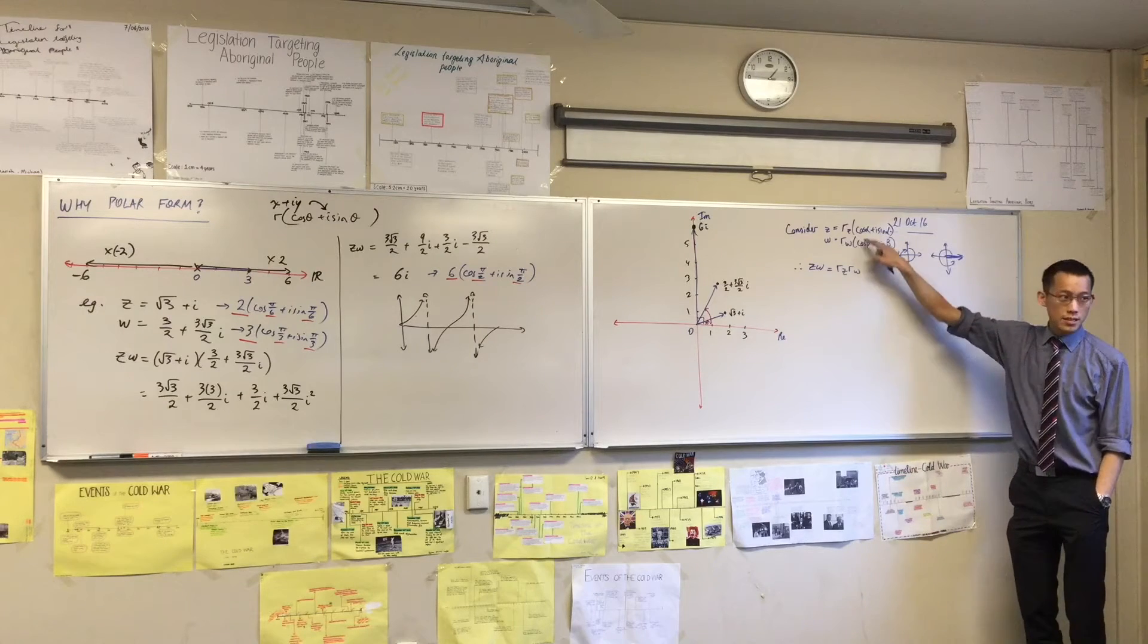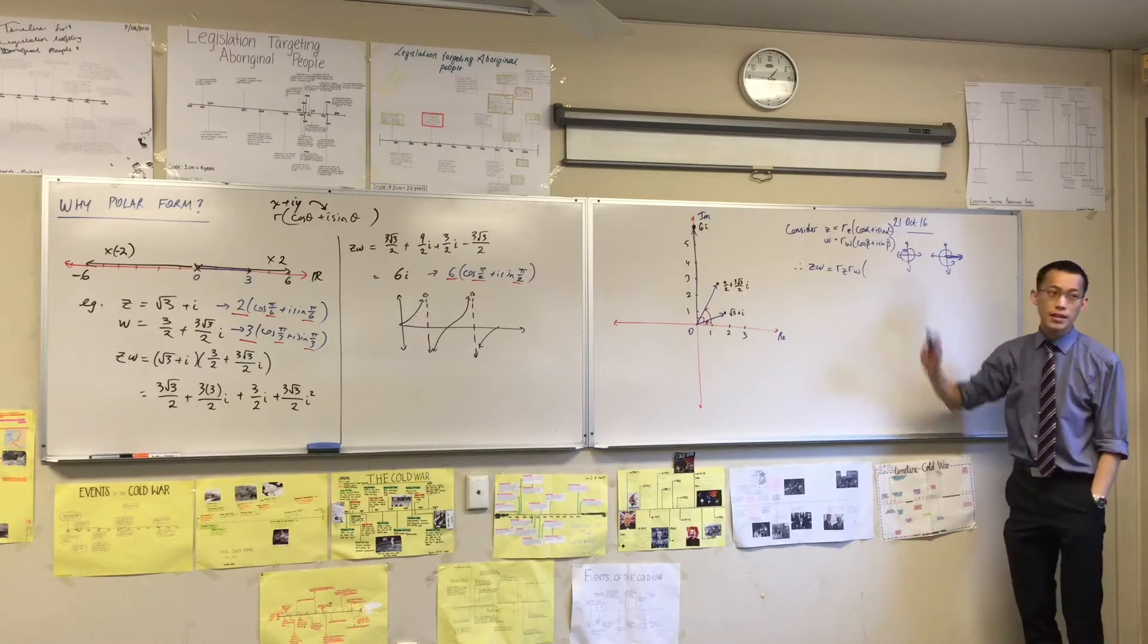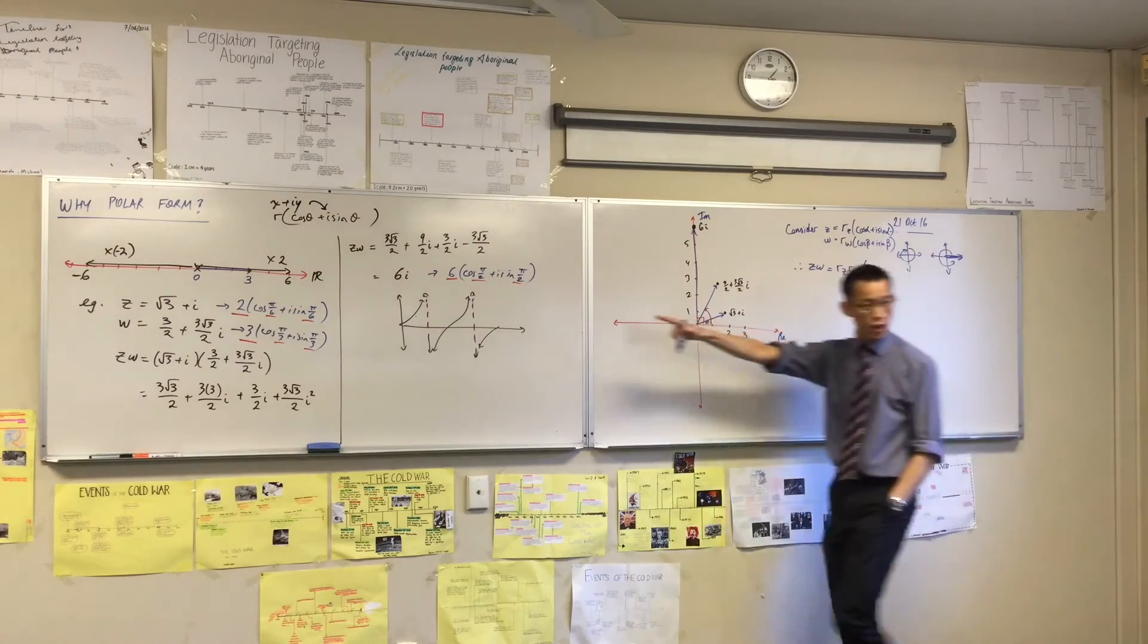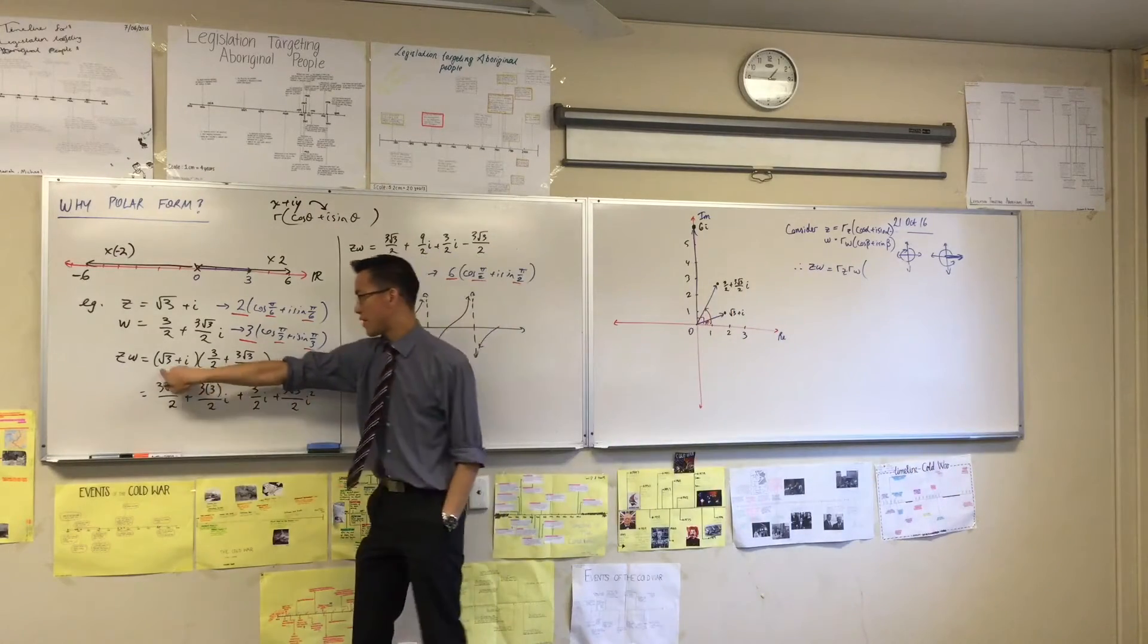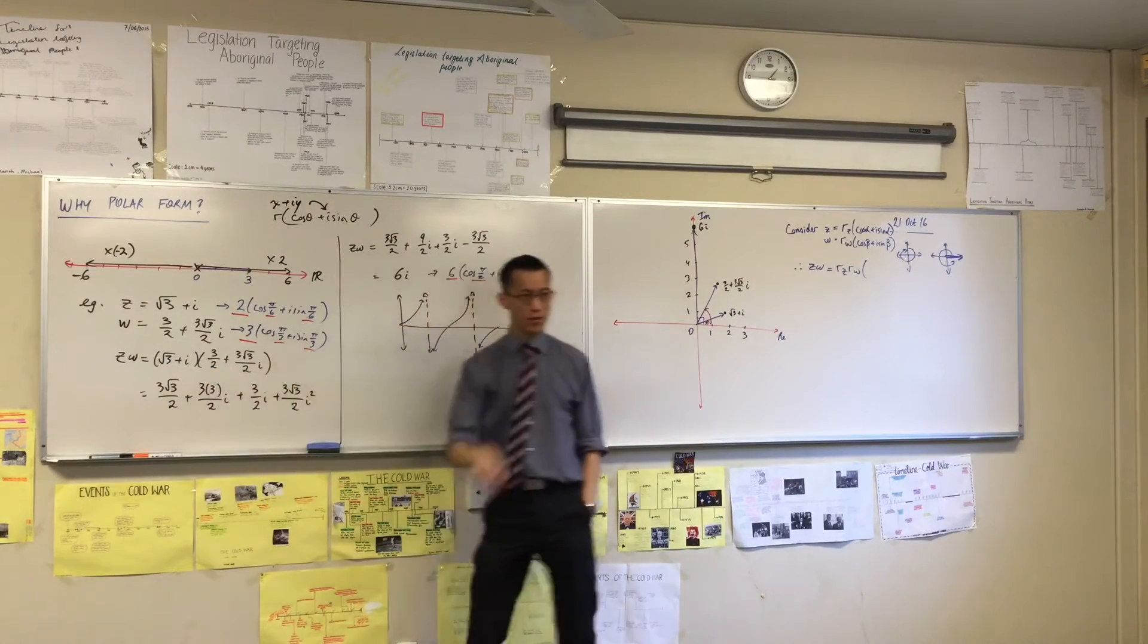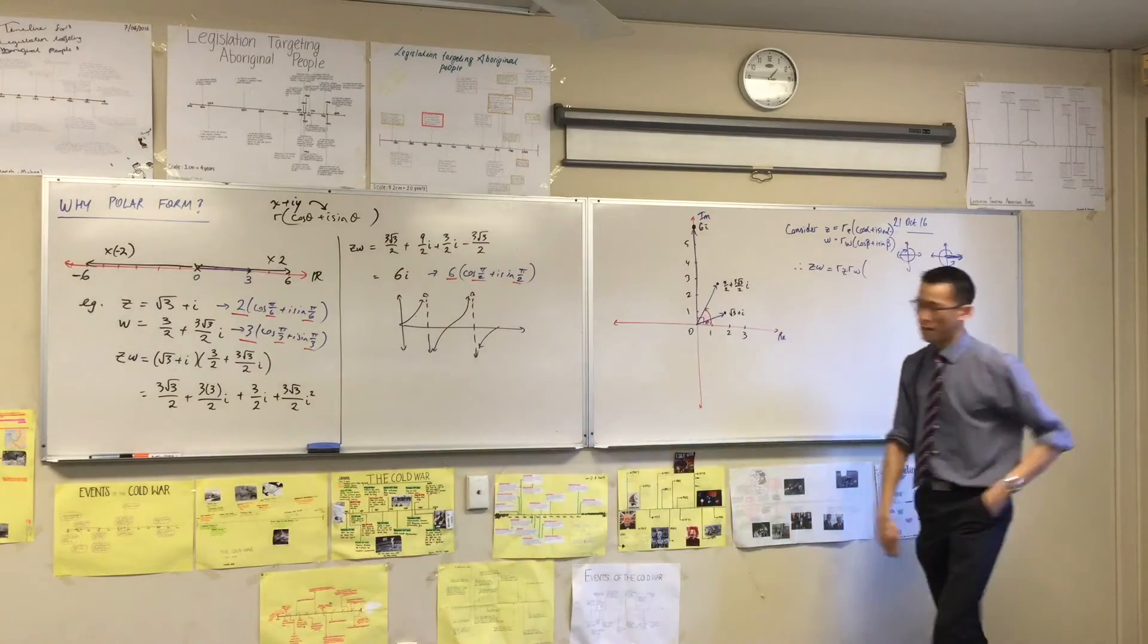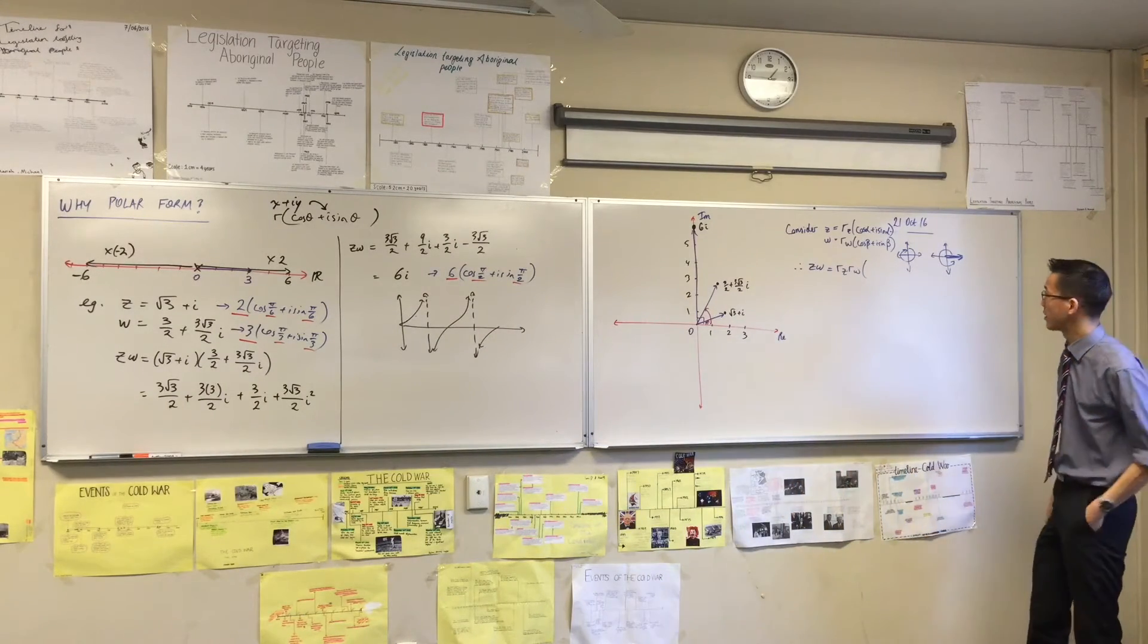But when I start to do these guys and unpack them, something interesting emerges. Just like over here, pair of things, pair of things. I'm just going to multiply through. One, two, three, four. First outside, inside, last, if that's the way you prefer to think about it, okay?